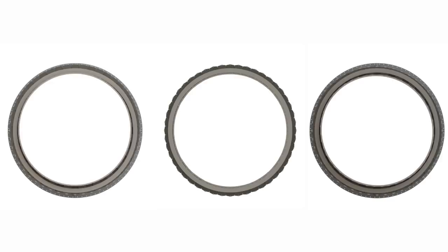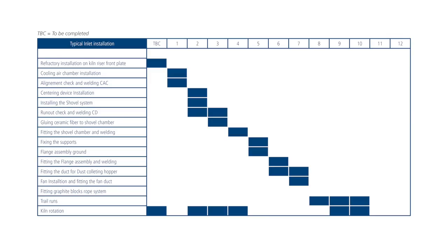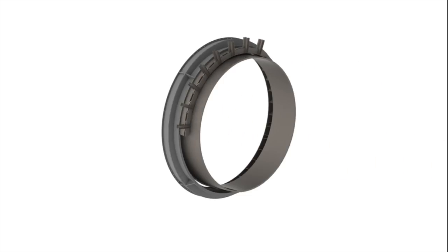The graphite seals have been designed to speed up the installation process in order to increase kiln availability and maximize output. Large parts of the graphite seals can be pre-assembled in sections which can easily be bolted to the existing construction.